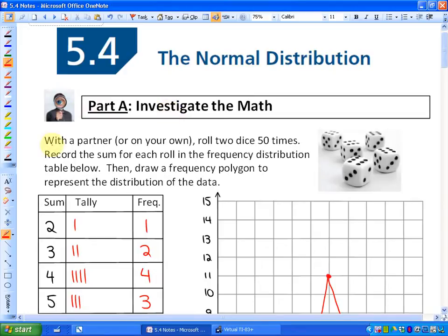If you're my student, you might have done this on your own or with a partner, or maybe not had time for it. But it says here, roll two dice 50 times, record the sum for each roll in the frequency distribution table below, then draw a frequency polygon or a line graph to represent the distribution of the data. So I've already done that because I don't want to spend the time on this video rolling two dice 50 times.